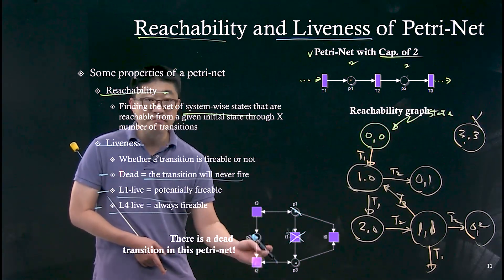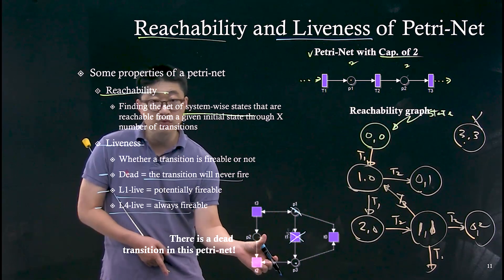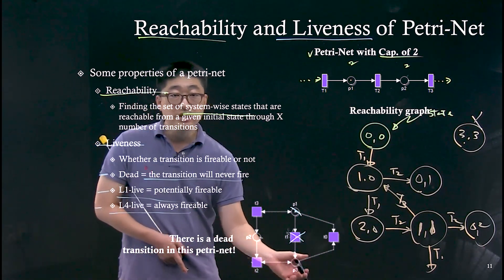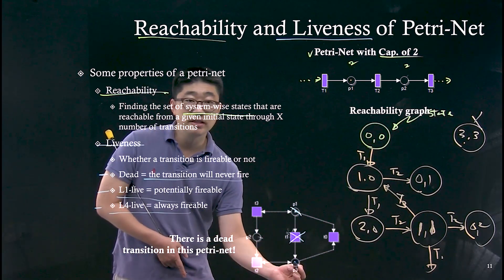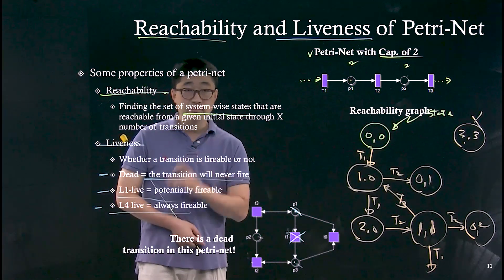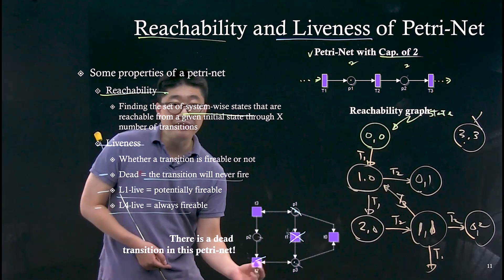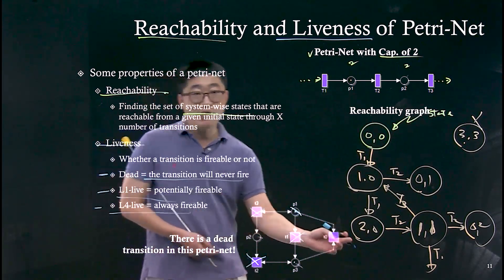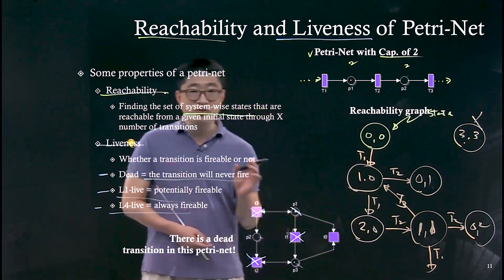If T2 is being fired: P1's token is consumed by firing T1, placing a token on P3 via T3. Now P2 and P3 both have a token. If T2 is fired, the requirements are met — P2 token is gone, P3 token is gone, but it creates one token on the output place. So T2 can be executed. Our only remaining transition to check is T0.